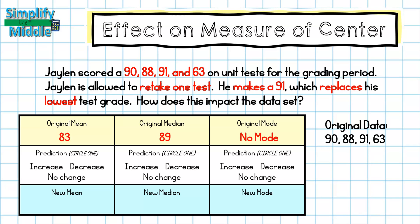Now let's make some predictions. I know I'm going to be replacing 63 with 91, and because there's such a difference in the numbers, I think my mean is going to increase since 91 is much higher than 63. For the median, when I replace the 63 with 91, my numbers will stay in roughly the same order, but my middle two numbers should be slightly larger, so I predict the median increases as well.